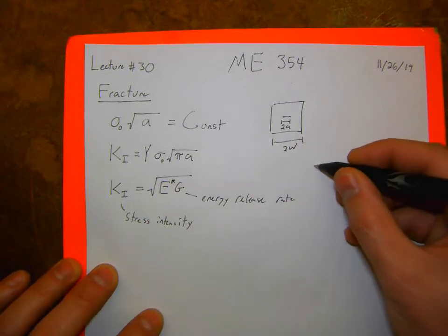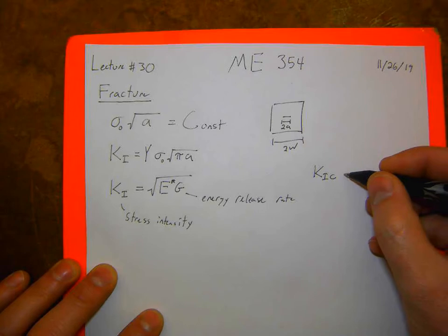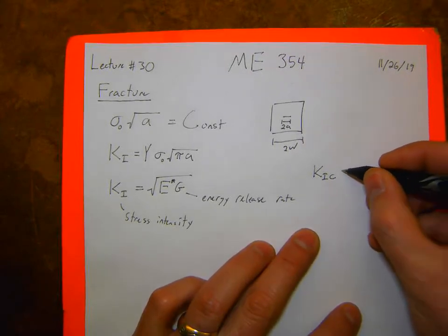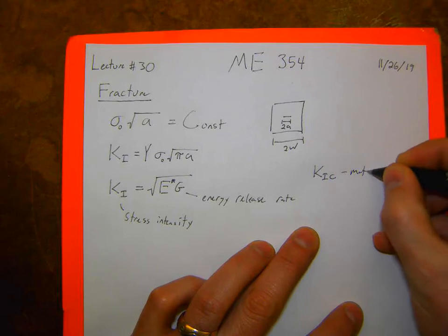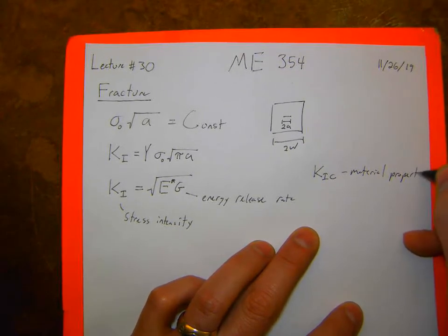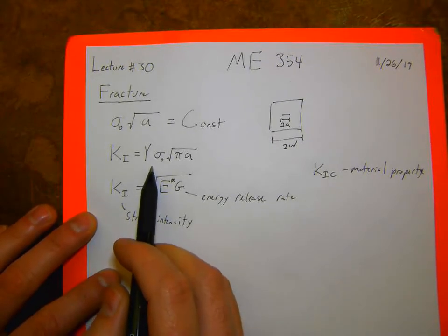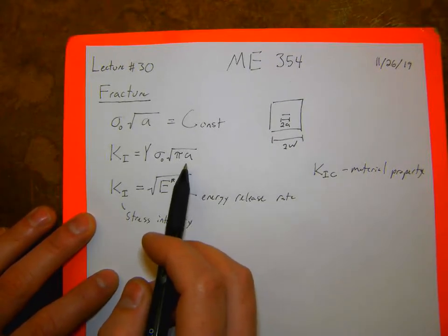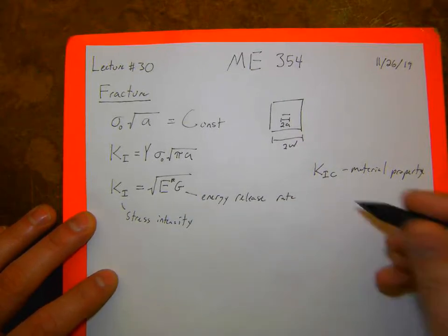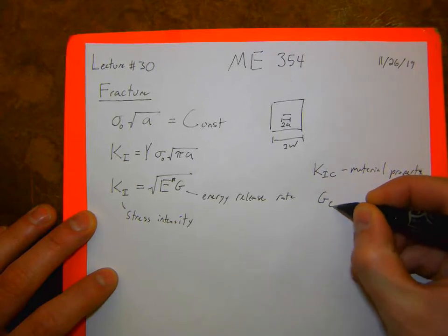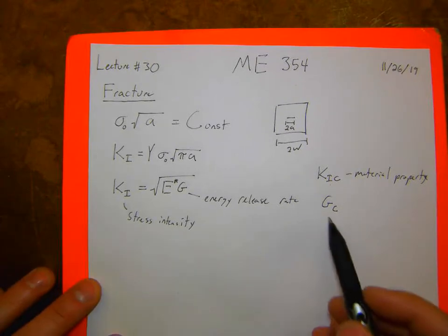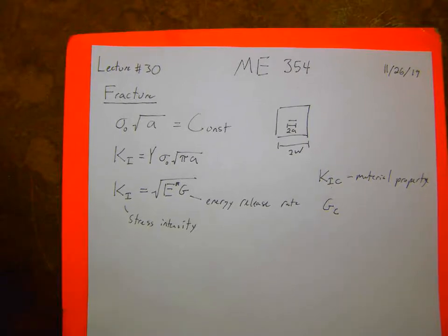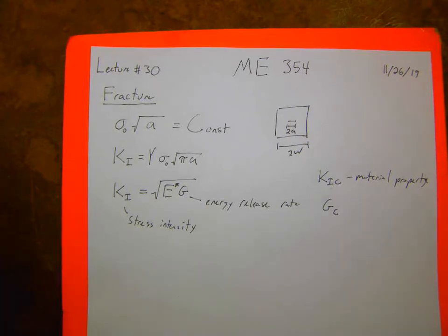The fracture toughness of a material is a material parameter. There's some KIC where materials will fail. We can say if there's a certain stress in that material, or for a given flaw size large enough for a given stress, it'll cause failure. There's also a critical energy release rate GC related to that KIC. GC is more intuitive — it's the energy it takes to cause fracture — whereas KIC is the stress it takes to cause a flaw to propagate.